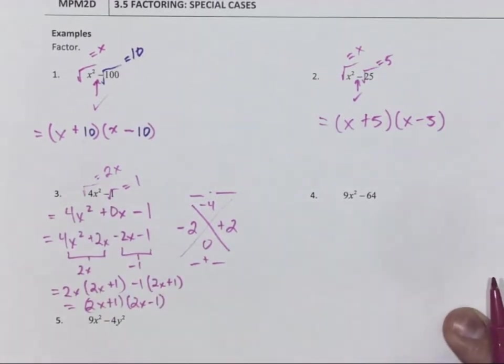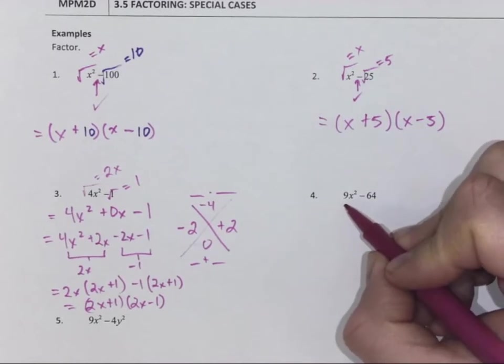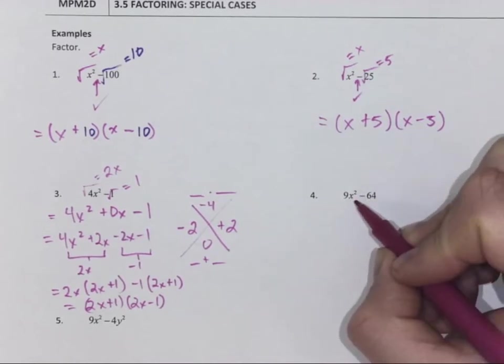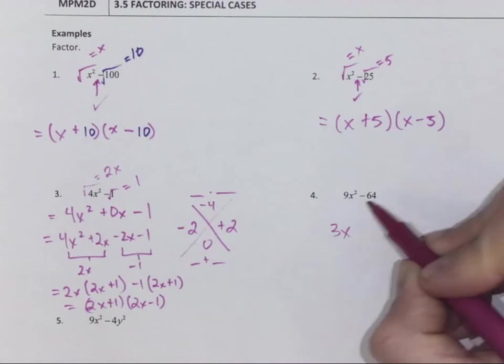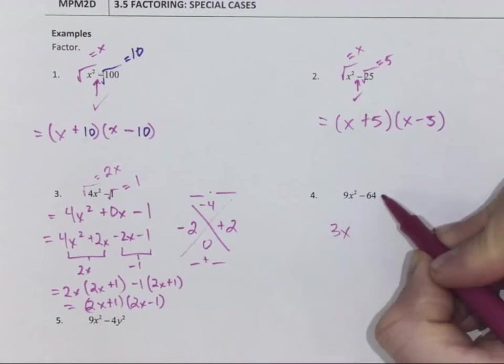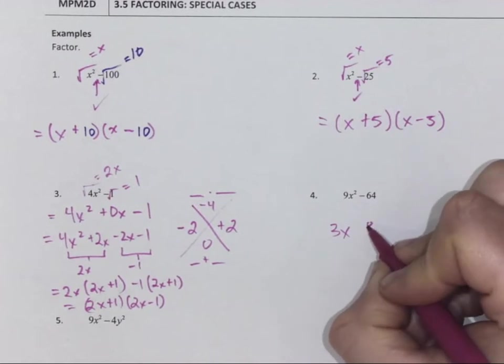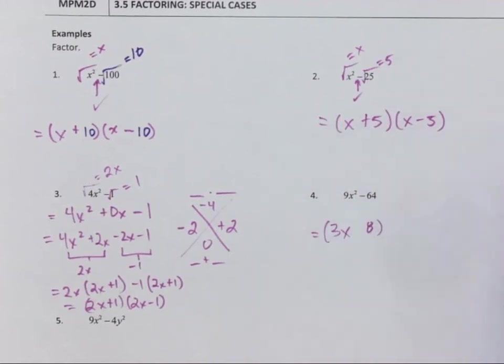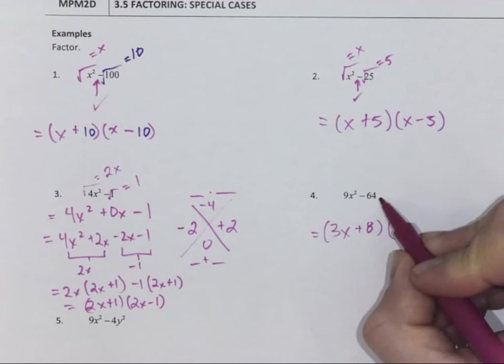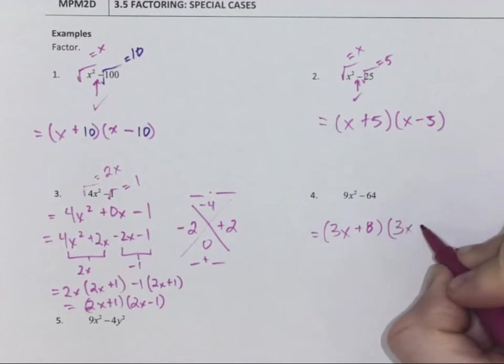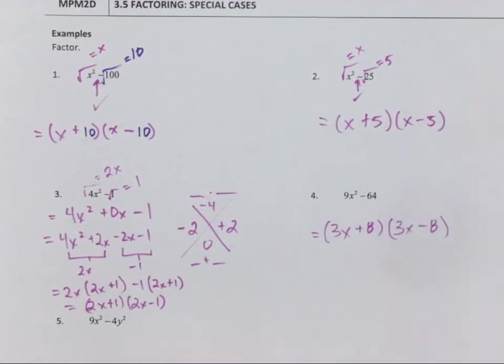Can I take the square root of 4x squared? Square root of 4 is 2, square root of x squared is x, so 2x. There's a negative. Can I take the square root of 1? It's 1. So I have 2x plus 1 in one bracket, 2x minus 1 in another bracket. But if I recognize the special pattern, I can go right to the end. So let's see a few more examples.